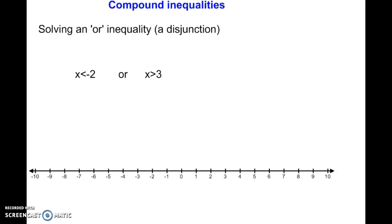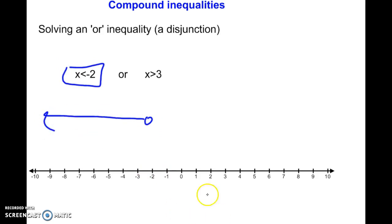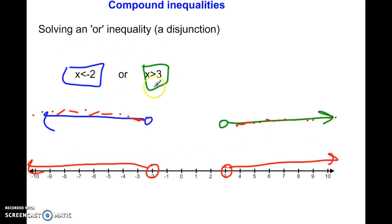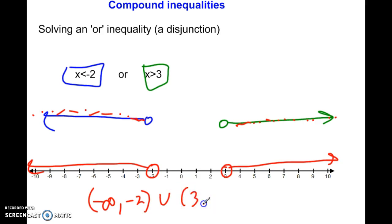Let's try another OR statement. Graphing each above: the first is an open circle at negative 2 with arrow to the left, and the other is an open circle at 3 with arrow to the right. For an OR statement, anything on either graph is a solution — lots of different solutions. So my final graph includes both of those regions. In interval notation: negative infinity comma negative 2 in parentheses, union with parenthesis 3 comma infinity.